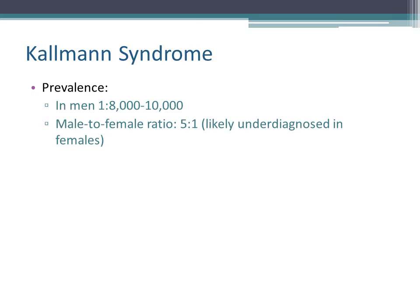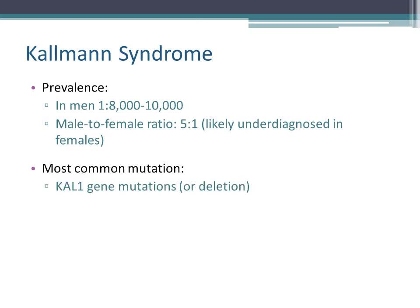The prevalence is estimated to be 1 in 8,000 or 10,000 in males. In females it is less common, with a male-to-female ratio of 5 to 1, and it is probably underdiagnosed in females. The most common genetic mutation for Kallmann syndrome is the KAL1 gene, whether it is a mutation or deletion, and there are several other genes linked to the same syndrome.